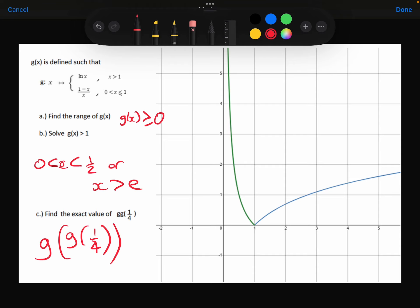So let's do that. When I substitute 1 quarter into G, now a quarter is roughly here. So substituting that into the 1 minus x over x part of the graph, we get 1 minus a quarter divided by a quarter, which is 3 quarters over 1 quarter, or just 3. So G of a quarter is 3.